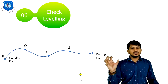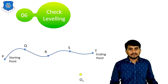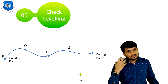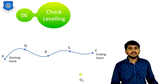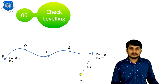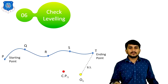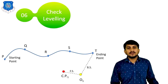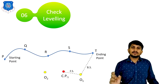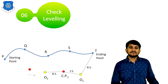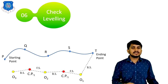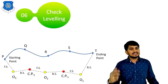In check leveling, only the first and last readings are taken because the levels of the points in between have already been calculated. We are just checking the work completed. From setup O1, we take the staff reading at station T — the ending point — which is BS since it is the first reading. Then the last reading from setup O1 is taken, which is FS. The setup is then shifted from O1 to O2, and the first reading at changing point 1 is taken as BS, followed by the last reading FS. Then the setup changes from O2 to O3, the first reading is taken, and finally we reach starting point P — the last reading is FS.